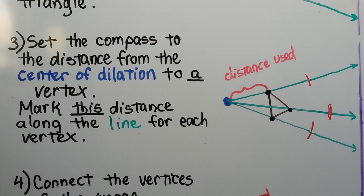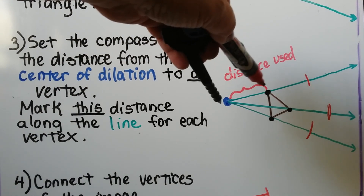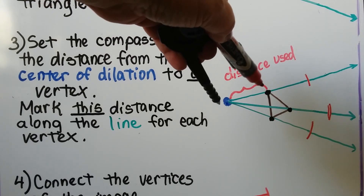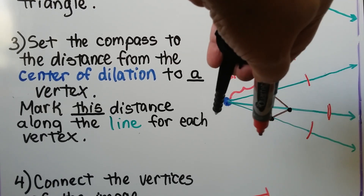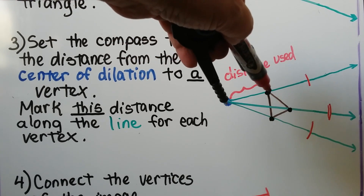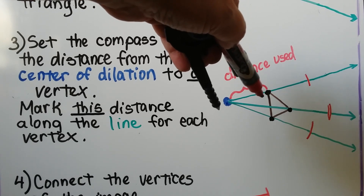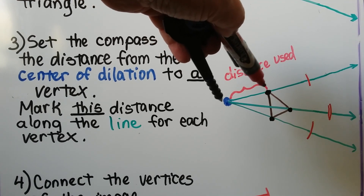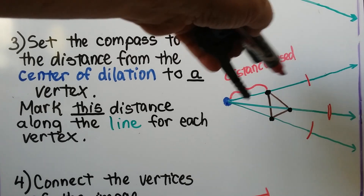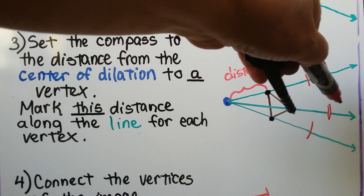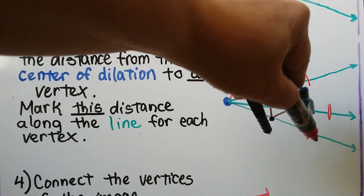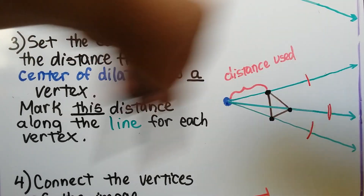The next thing we do is use a straight edge to draw a line through the center of dilation and each vertex of the triangle — make them kind of long, because if we're making a dilation we're going to have a bigger figure, so we need our rays to be coming out past our triangle. Now we set the compass to the distance from the center of dilation to a vertex, and we mark this distance along the line for each vertex — making an arc at each one.